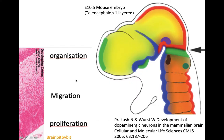Before we go into detail about the loss of neurons in Parkinson's disease, I want to make some comments on the origin of the dopaminergic neurons.